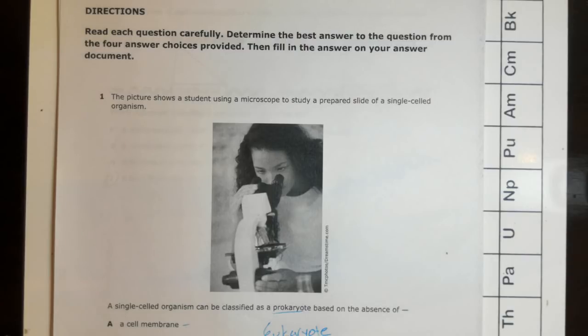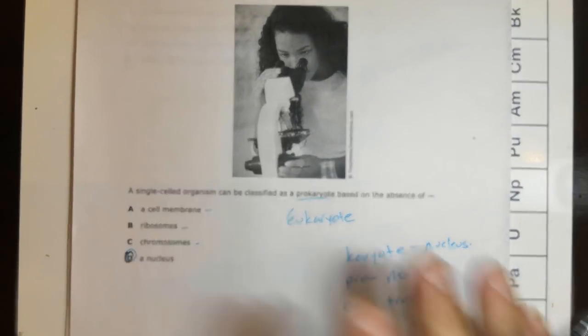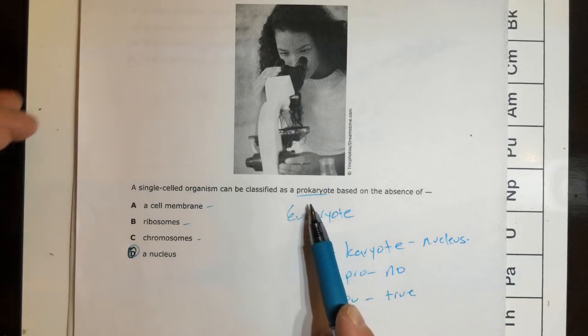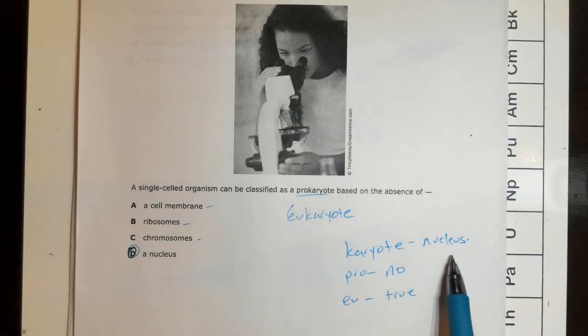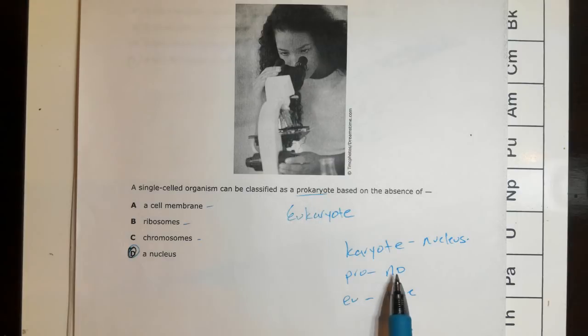Question one says the picture shows a student using a microscope to study a prepared slide of a single-celled organism. A single-celled organism can be classified as a prokaryote based on the absence of... I would think there's a prokaryotic cell and a eukaryotic cell. I know that karyote means nucleus, and pro means no, and eu means true. So if we have a eukaryotic cell, we have a true nucleus. If we have a prokaryotic cell, we have no nucleus.